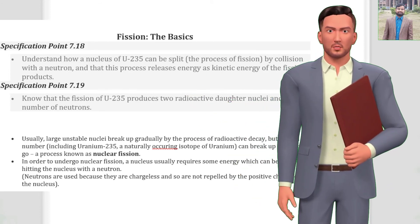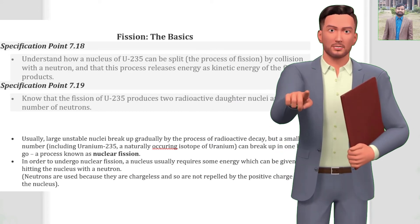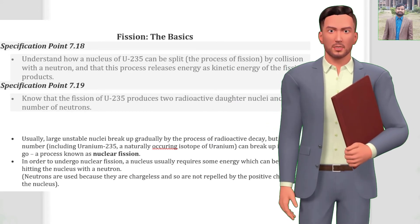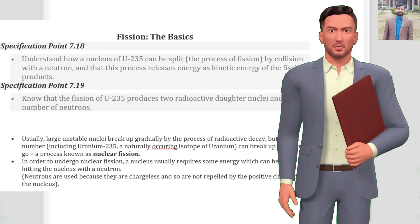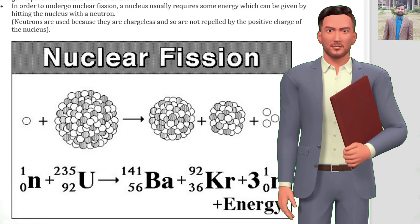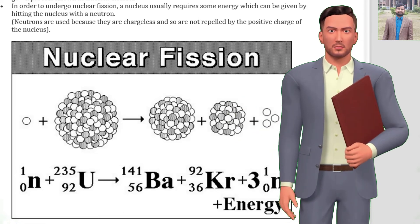Know that the fission of U-235 produces two radioactive daughter nuclei and a small number of neutrons. Usually, large unstable nuclei break up gradually by the process of radioactive decay, but a small number, including uranium-235, a naturally occurring isotope of uranium, can break up in one big go, a process known as nuclear fission.